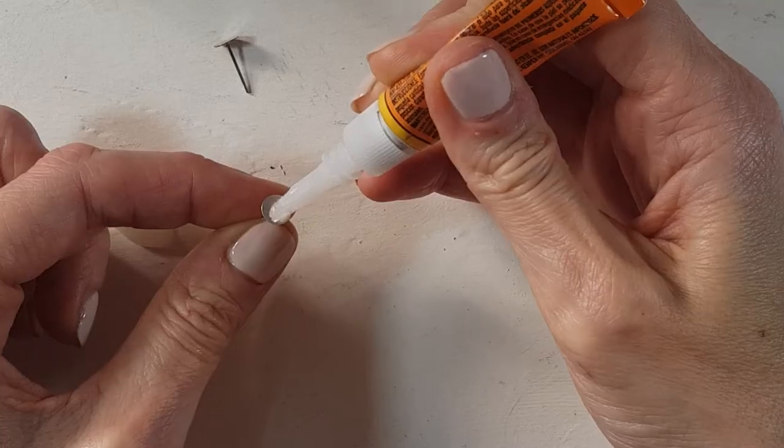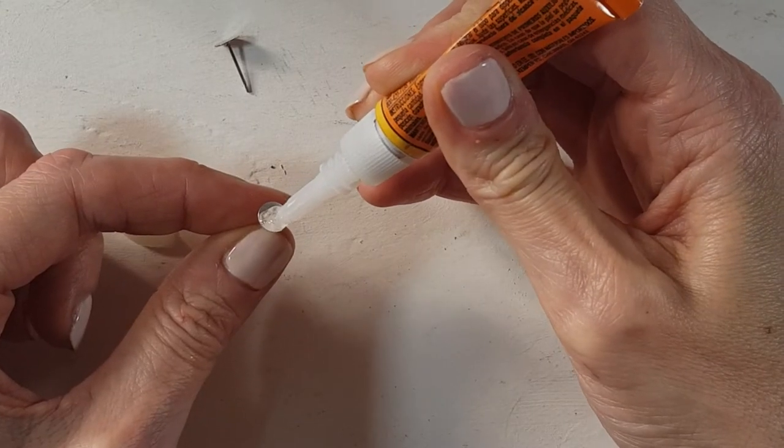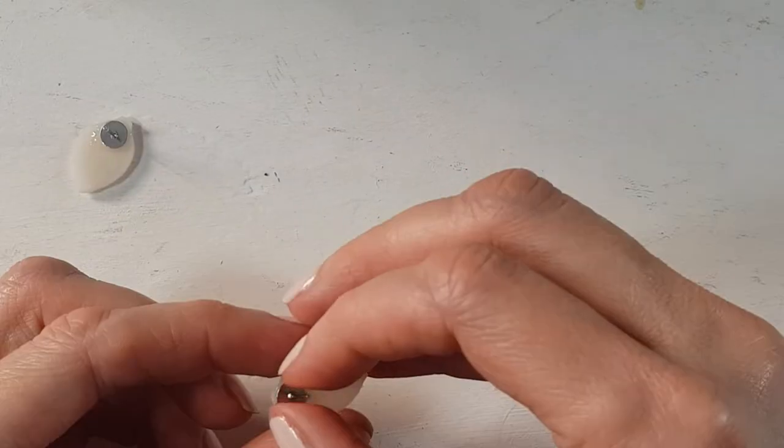So for the single earrings, once everything is dry, I'm just going to be taking some earrings like this, super glue, and I'm just going to glue the earring to the back of it.